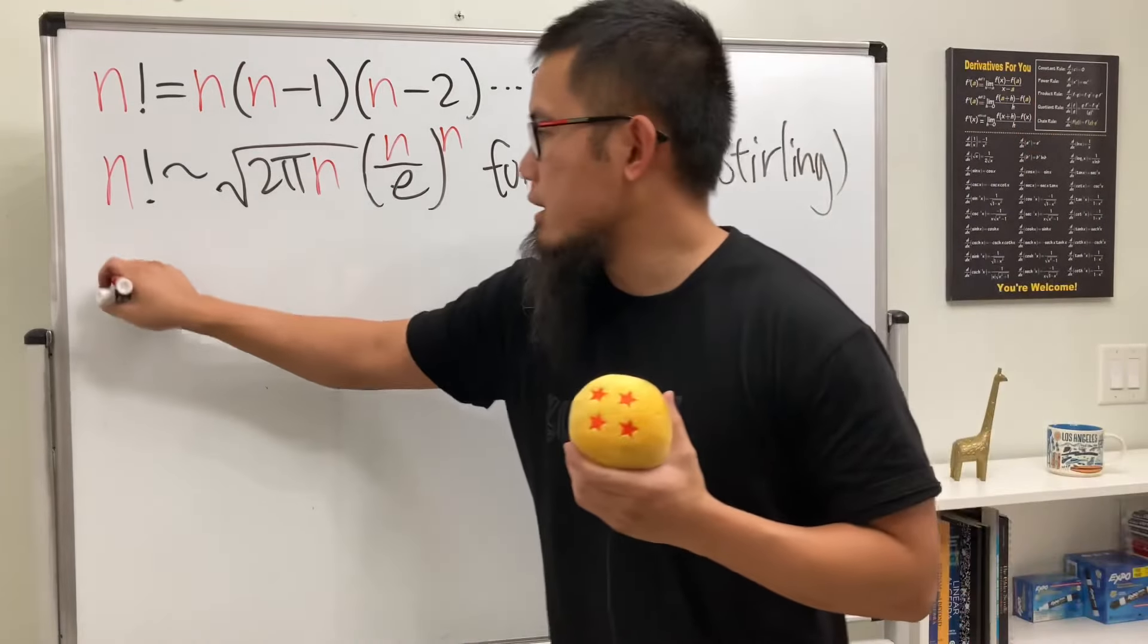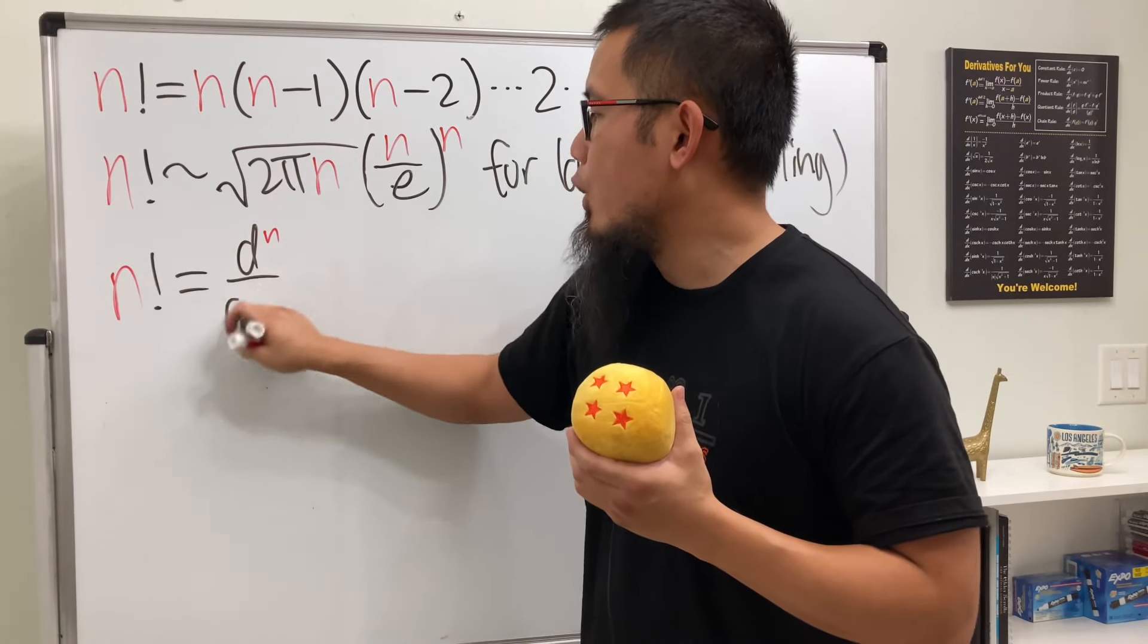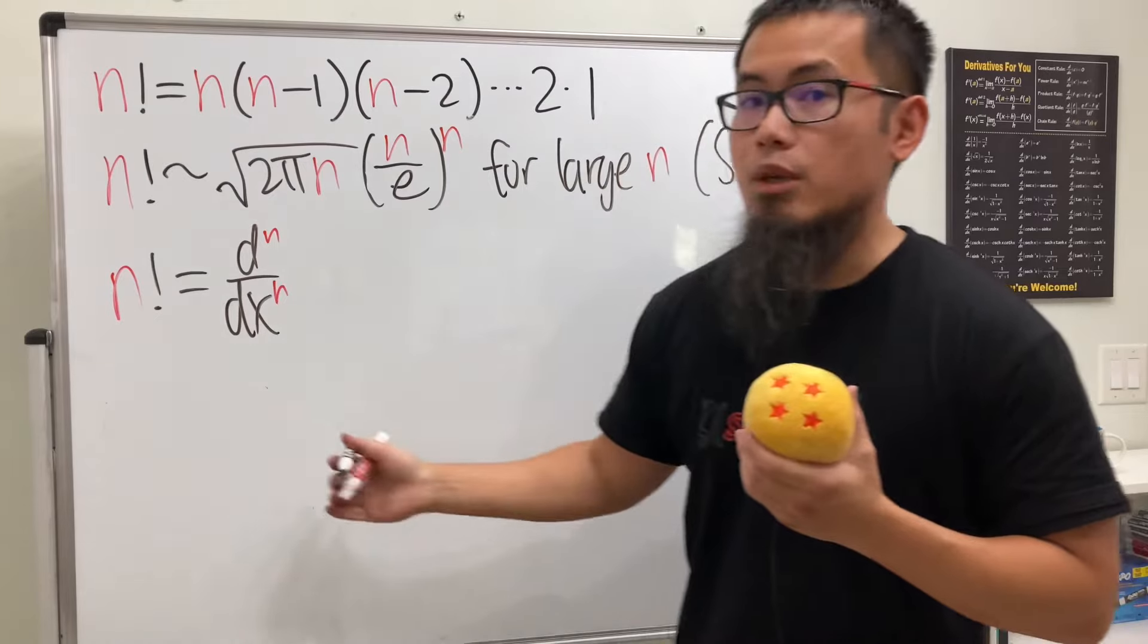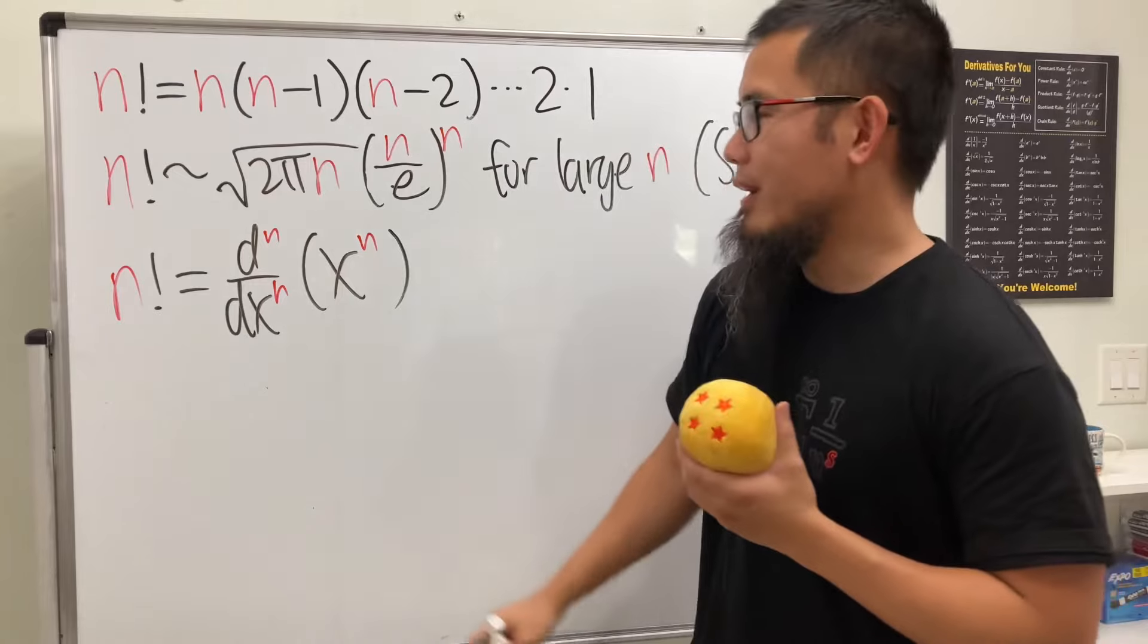Okay, next let's talk about n factorial as a derivative. This is just going to be d to the n, meaning that we are going to differentiate n times of what? Well, of course, x to the n's power. You can try this out, you will actually get n factorial.